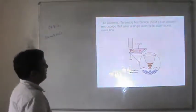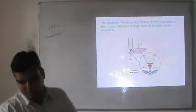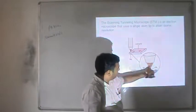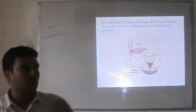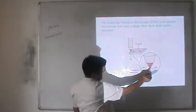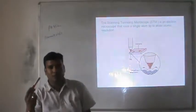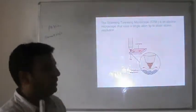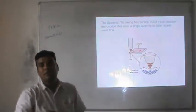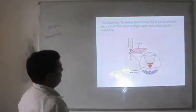The scanning tunneling microscope uses a single atom tip to attain atomic resolution. The last atom of the tip is a single atom of the material. When an electron tunnels through this atom to the sample or from sample to tip, that tunneling of an electron from tip to sample or sample to tip is responsible for the information obtained by this microscope.